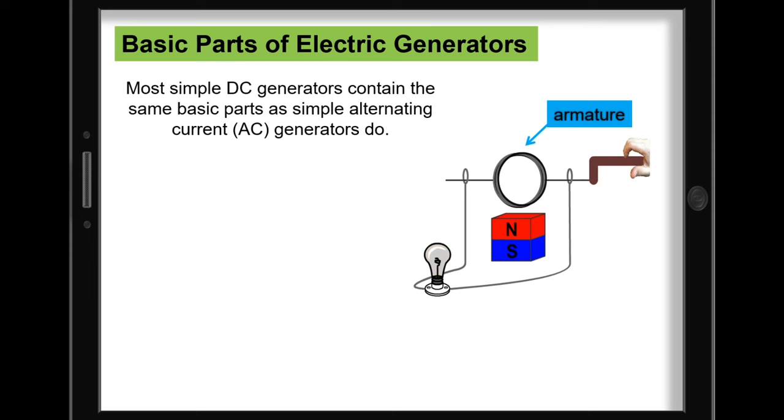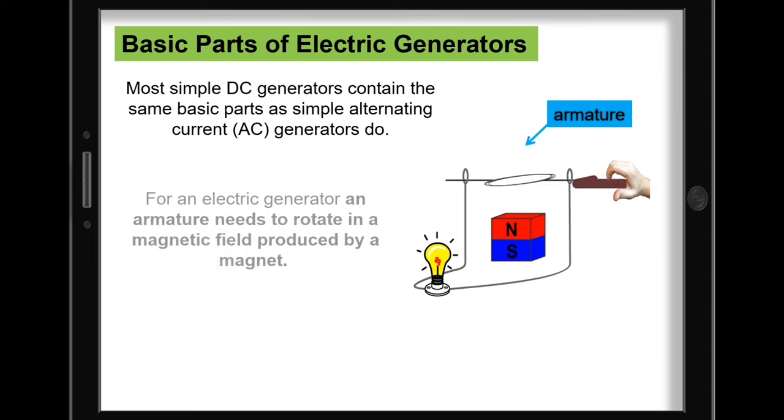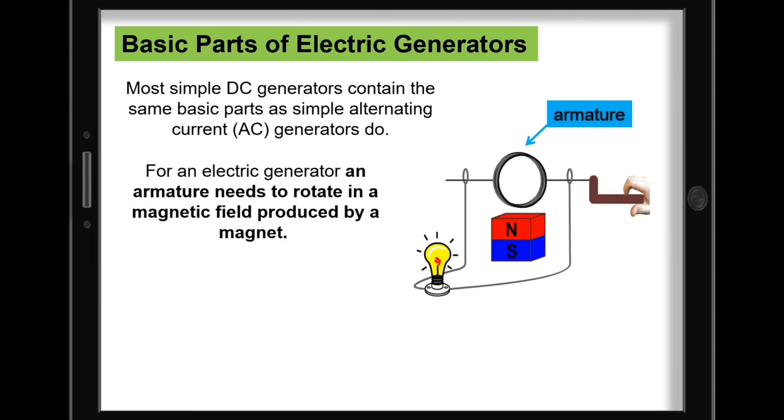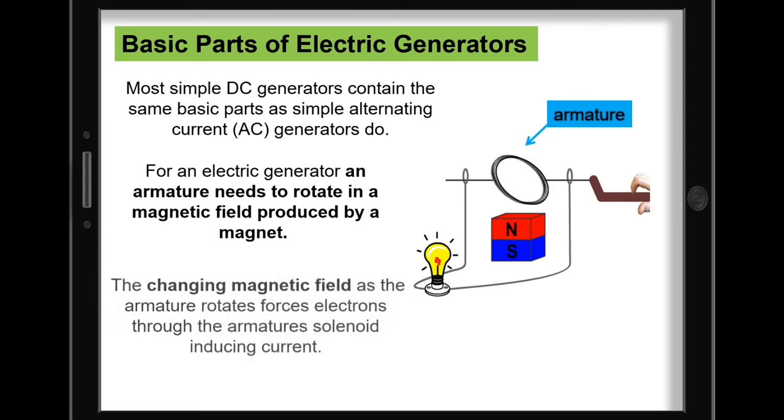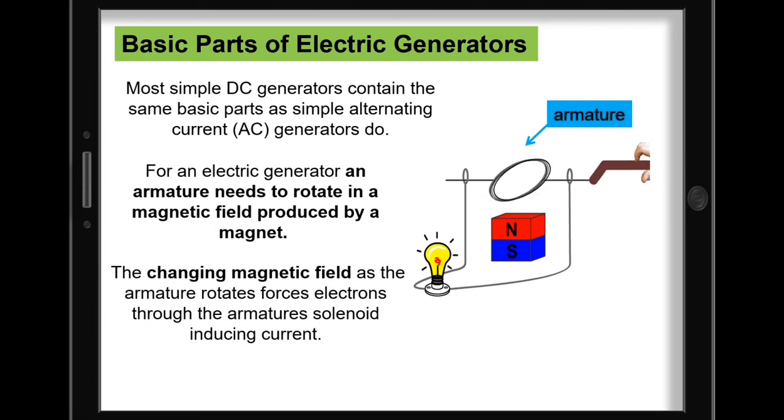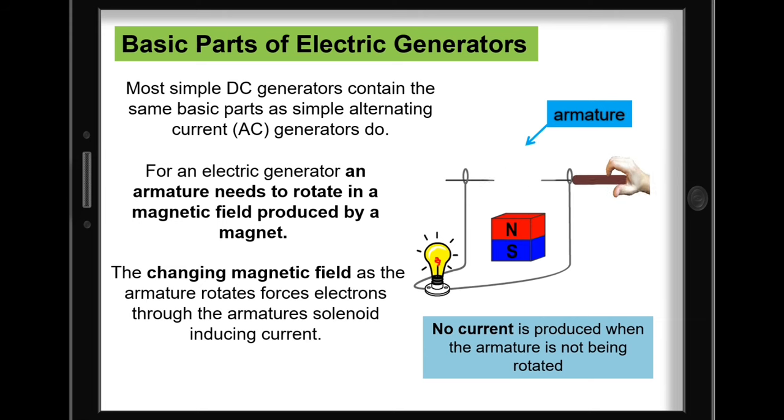An electric generator is the opposite of a motor. Most simple DC contain the same basic parts as simple alternating current generators do. For an electric generator, an armature needs to rotate in a magnetic field produced by a magnet. The changing magnetic field as the armature rotates forces electrons through the armature's solenoid, inducing current. Notice in our model that no current is produced when the armature is not being rotated.